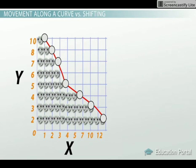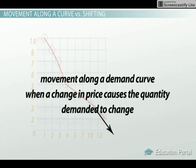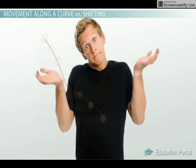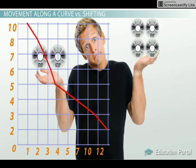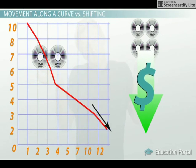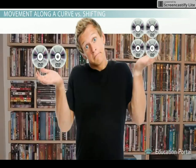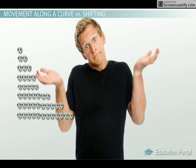Now that we know how an individual demand curve is created, let's explore what might cause us to move along the curve. There is movement along a demand curve when a change in price causes the quantity demanded to change. Let's go back to Jerry for a moment. What might cause Jerry to move along the demand curve and buy 4 DVDs rather than 2? If you said lower prices for DVDs, you are correct. Altering DVD prices will most likely cause consumers, or Jerry, to buy more DVDs or less DVDs, depending on where the new price is set. The demand curve itself does not move or shift — rather there is movement along the curve.